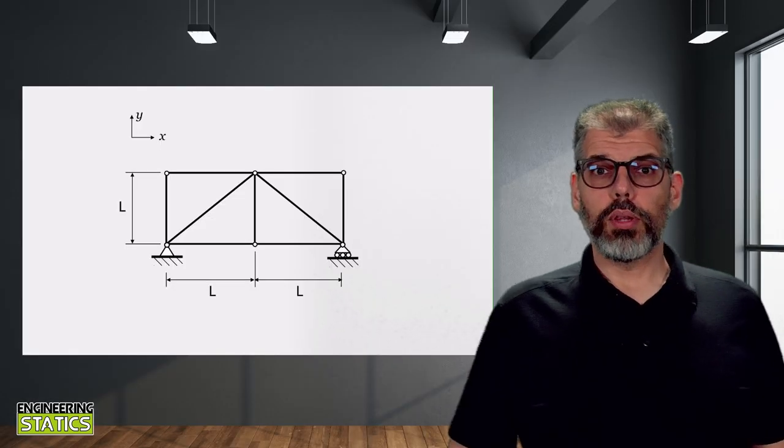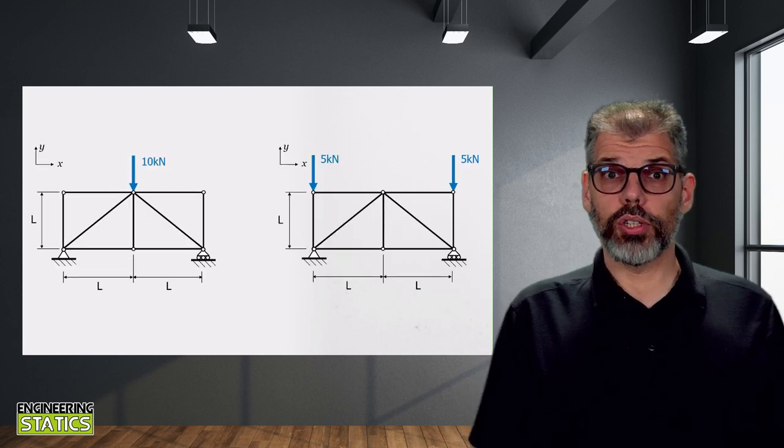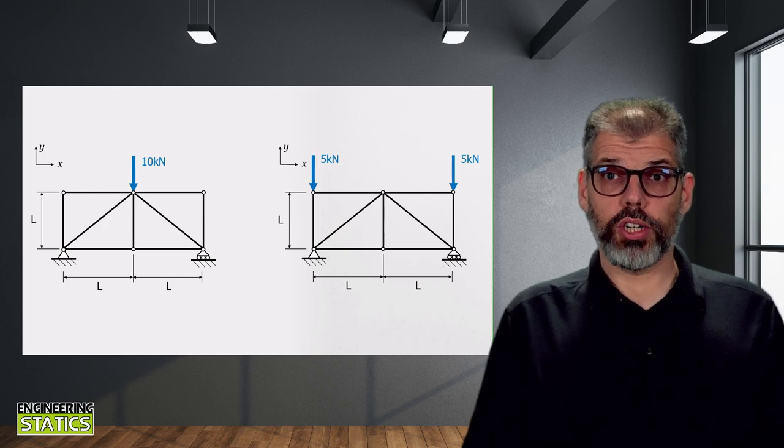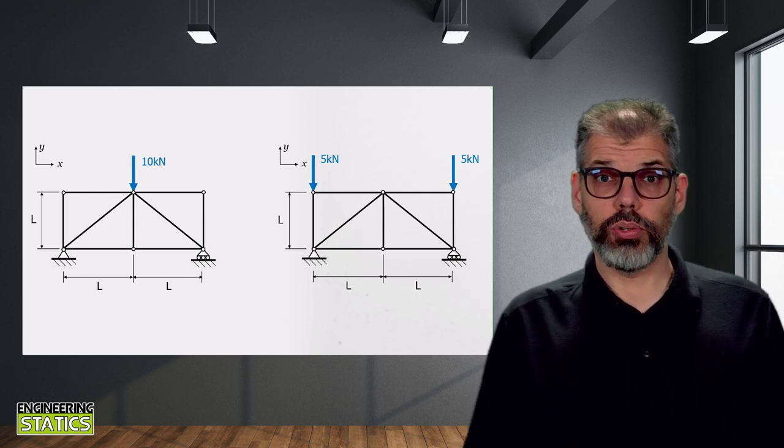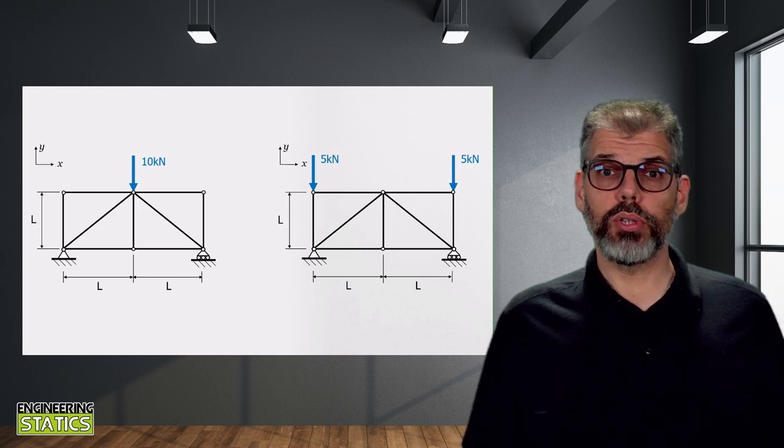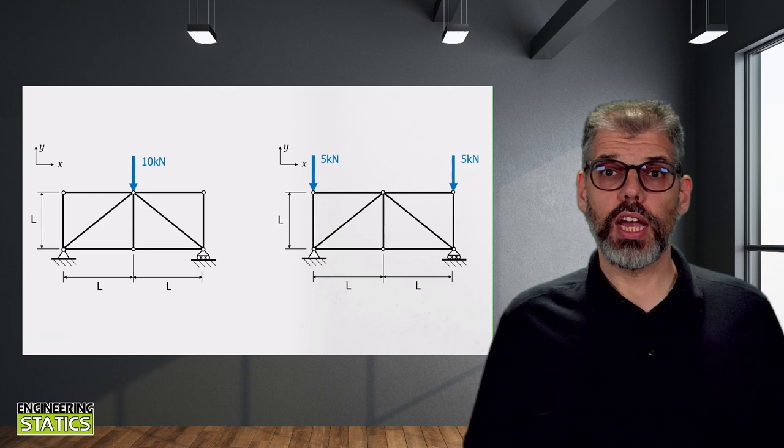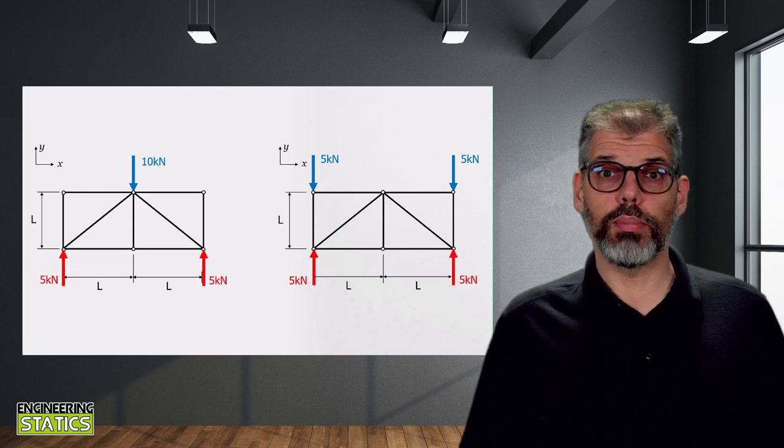Take for example the following simple structure. We can analyze two separate load cases for the structure which cause it to behave as a truss structure, as the loads are applied at the joints. We can easily see from the symmetry of the problem that both load cases are statically equivalent, producing the same reaction forces at the removed supports in our free body diagrams. The calculation of those reaction forces is quite straightforward, so I'll leave it up to you to verify.